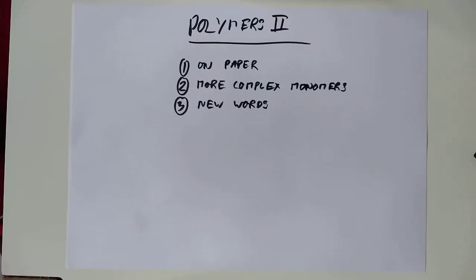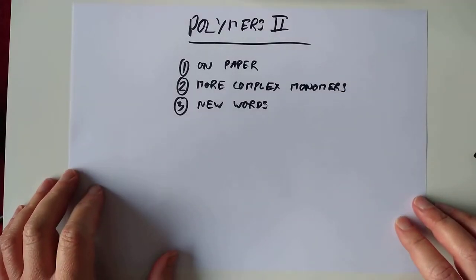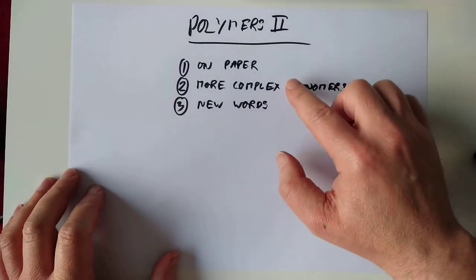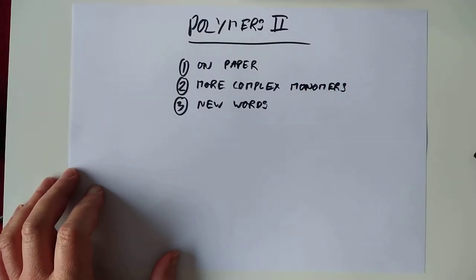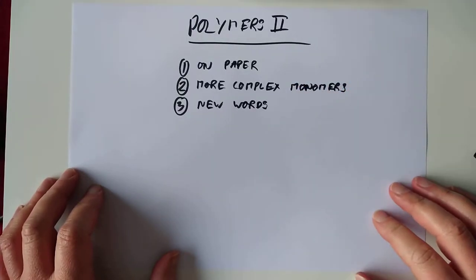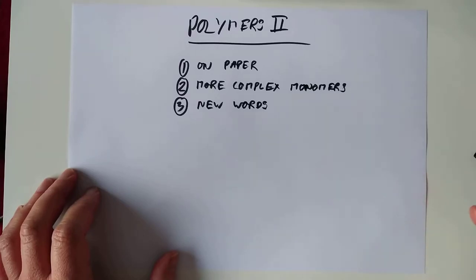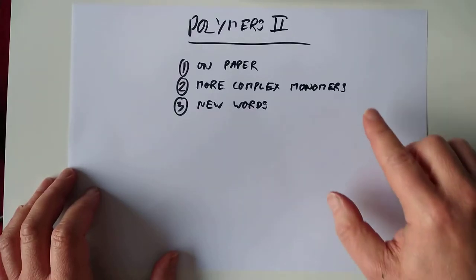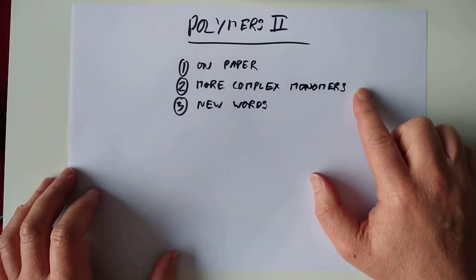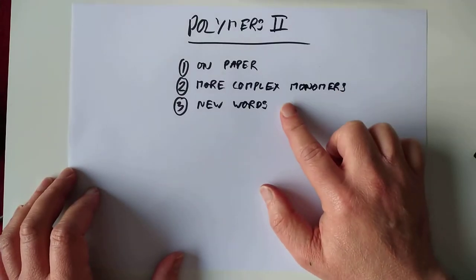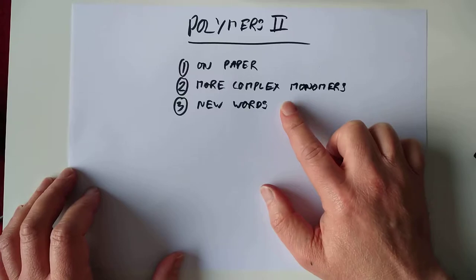Hi folks, welcome back for 4th Level Chemistry. This is Polymers 2, the plastic strike back. I'd like to cover three main learning outcomes. Number one is how you draw the formation of polymers on paper. Also, how do we cope with more complex monomers than just ethene? And lastly, a couple of new words to be thrown at you.